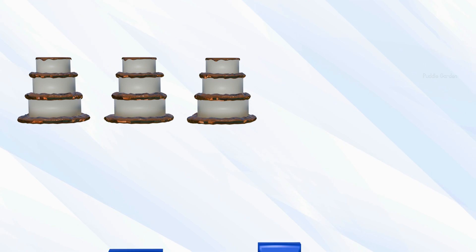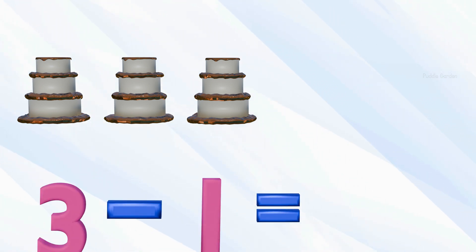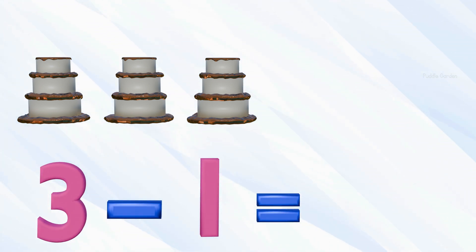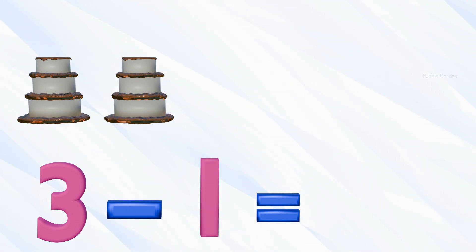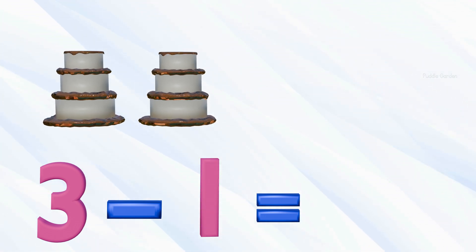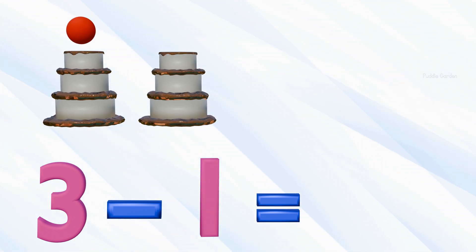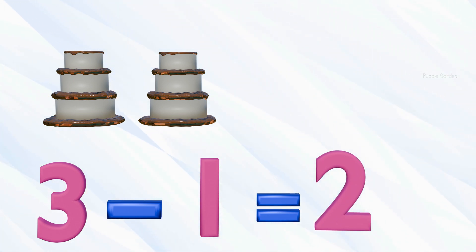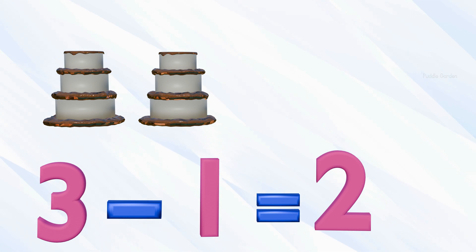If we have three cakes — three subtract one — how many are left? We have three and we took away one. That means there are two left. Three subtract one equals two.